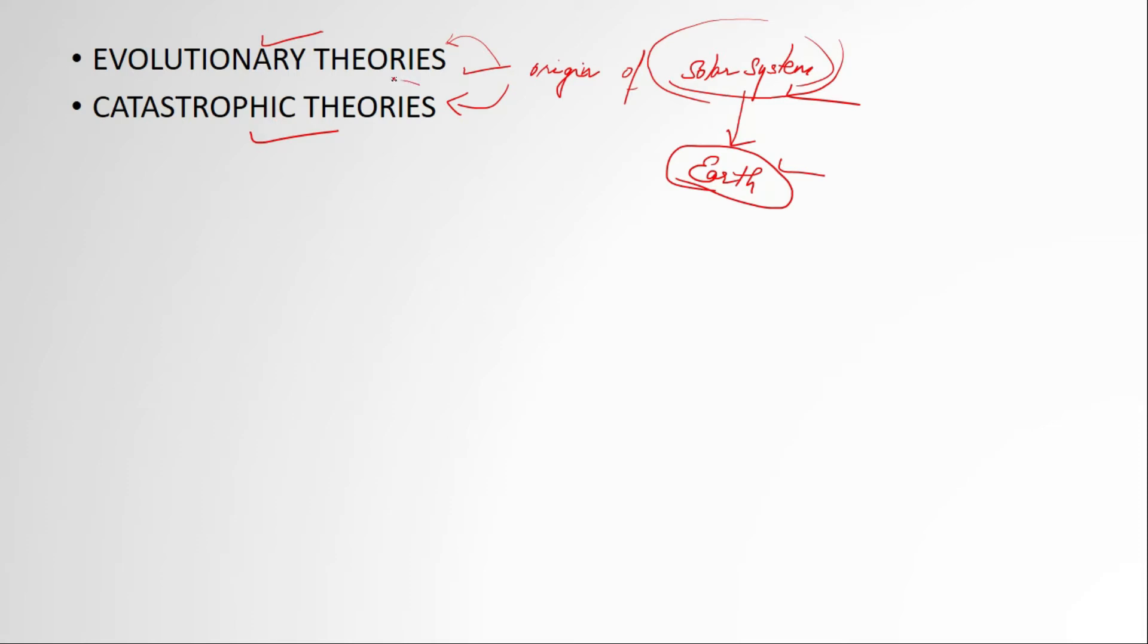Let's have a brief look at what these theories are. At first, when you talk about the evolutionary theories, the people who have given these theories say that the sun and the planets both formed during the same time. These theories suggest that planets are formed during the evolution of the sun. They didn't say that at first the sun formed and then the planets formed.